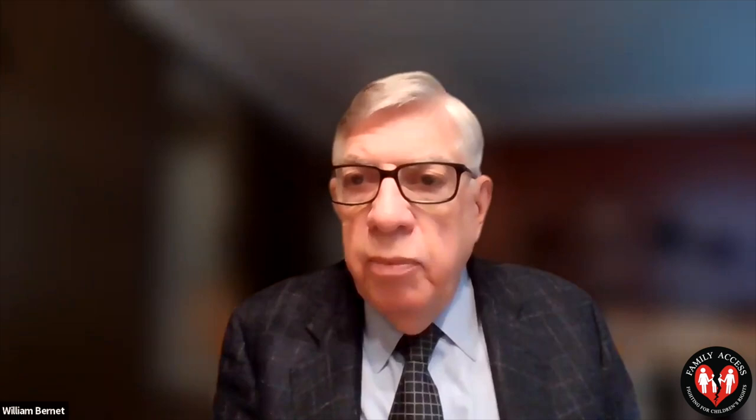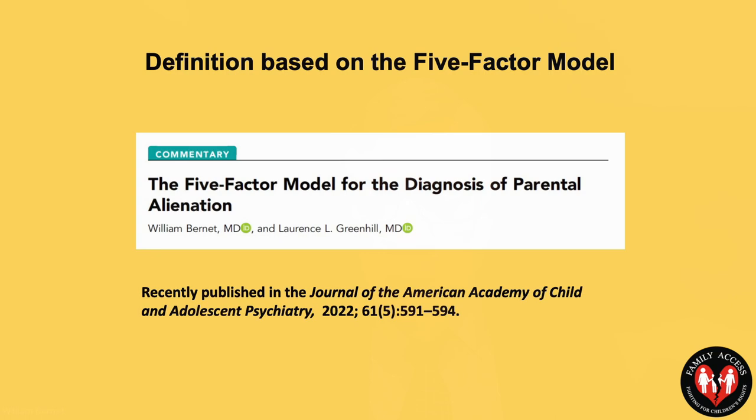These five criteria were published only a few months ago in an article called 'The Five-Factor Model for the Diagnosis of Parental Alienation.' Dr. Amy Baker and I have been discussing these five factors for several years, with articles and book chapters on the topic for a long time. But it was important that this article was published in the Journal of the American Academy of Child and Adolescent Psychiatry. That is part of the reason we are now ready to present the proposal that PARP should be included in the DSM.